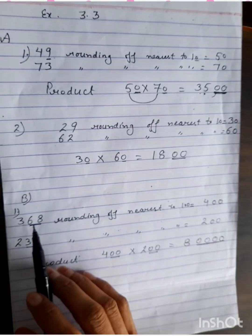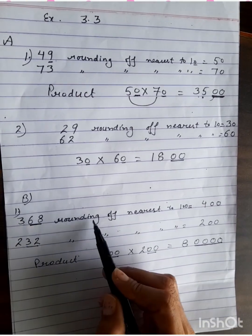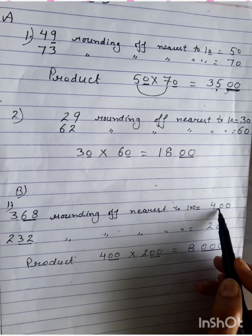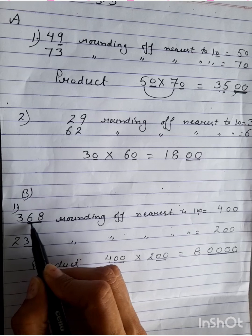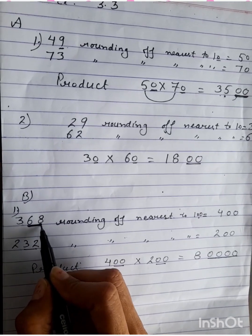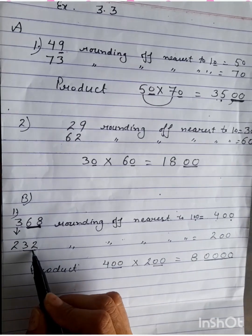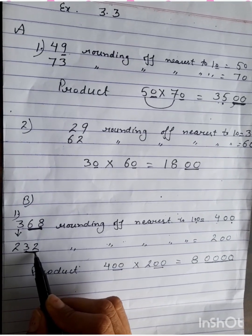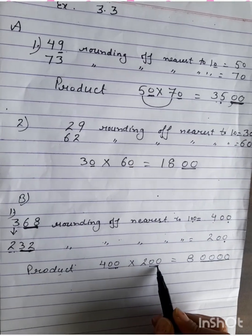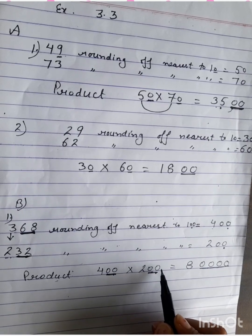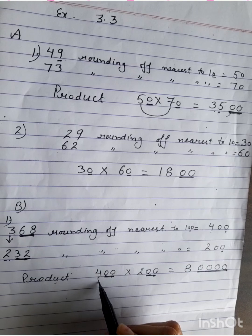Similarly, next question, part B, rounding of nearest to 100. 368, rounding of nearest to 100 is 400. Because 100 have two zeros, so we will check last two digits that are more by 50. It is 68. So 3 will increase. So it is 400. 232, 32 is smaller than 50. So 200 will remain same. So product of 400 and 200. Four zeros are there. I have counted 1, 2, 3, 4. So write four zeros as is. 4 times 2 is 8.